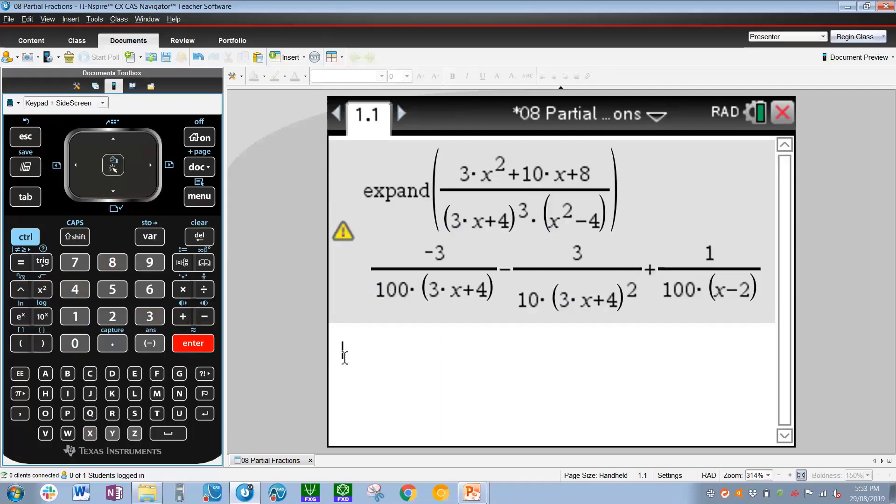Now just as a bit of an aside and expansion of what's happening here, you might notice that with the 3x plus 4 cubed, you don't see 3x plus 4 cubed at the bottom. Also, you don't see x squared minus 4; you only see one of its factors, which is x minus 2.